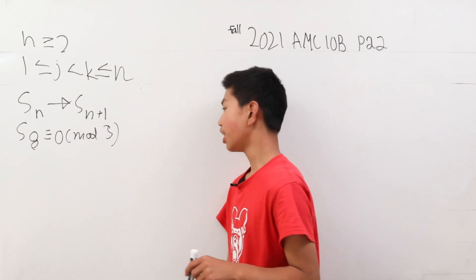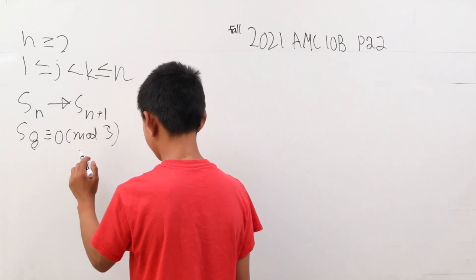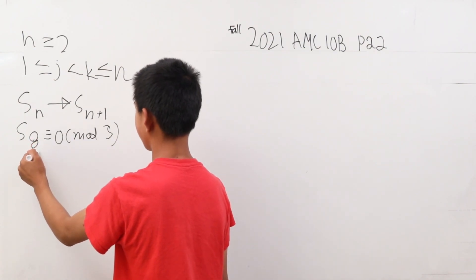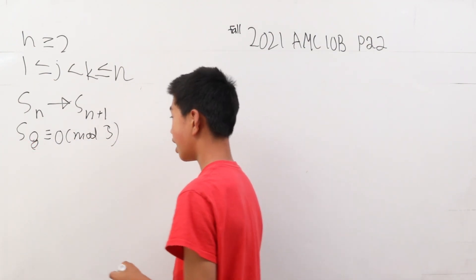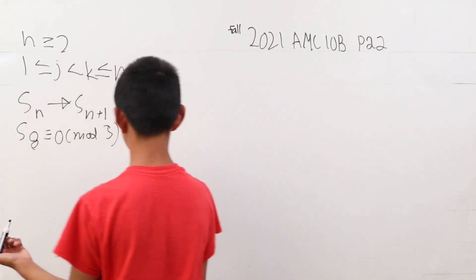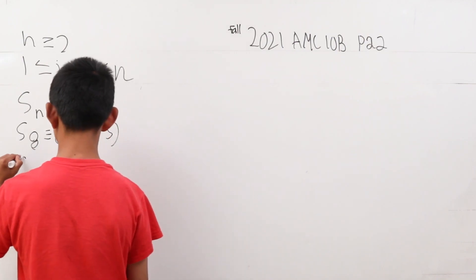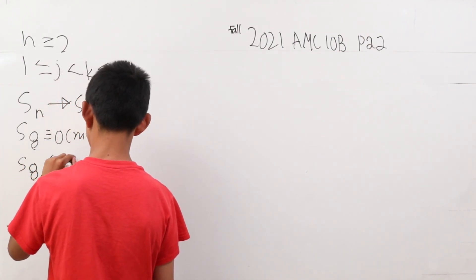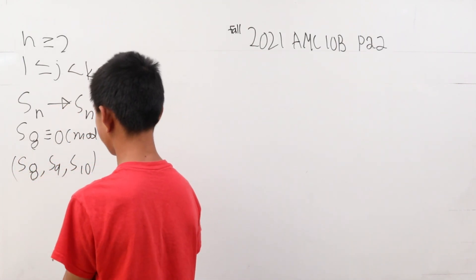Earlier we proved that it moves every 3 and s of 8 is the first term of 0 mod 3 that can be divided by 3. This goes on for two more, s of 9. These are in groups of 3. This is s of 8, s of 9, and s of 10. Those are the first three.